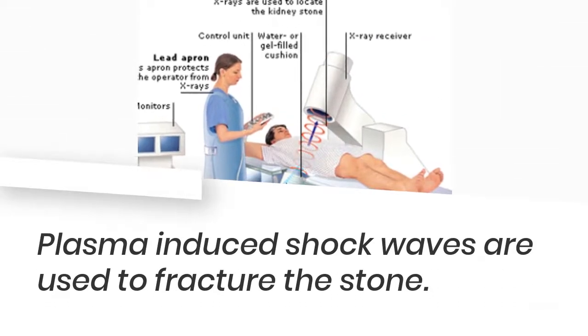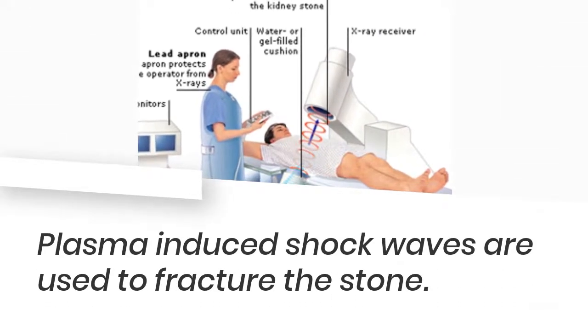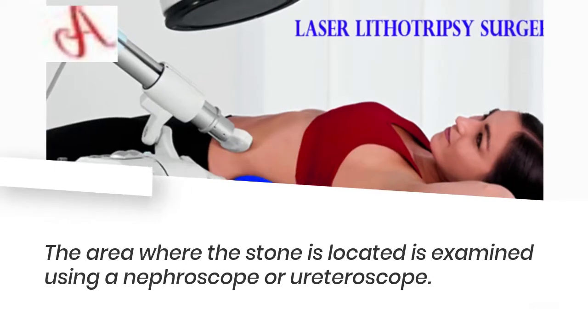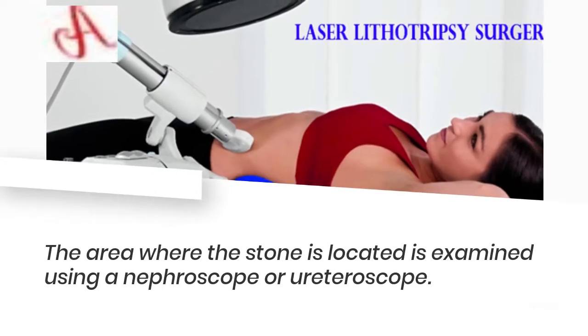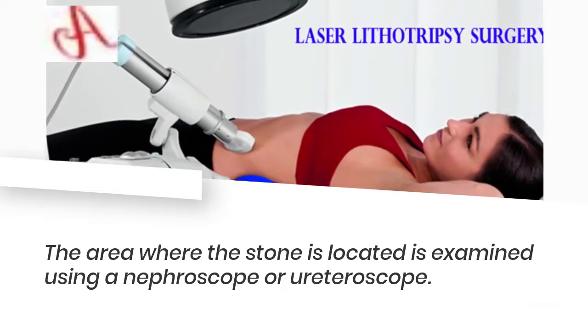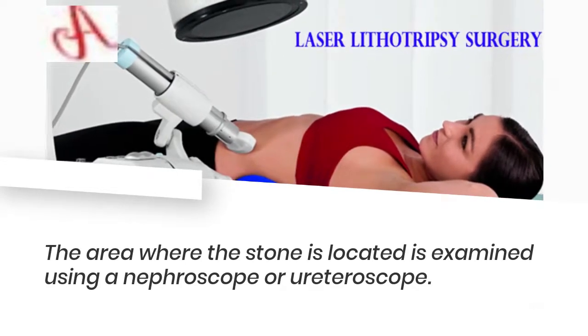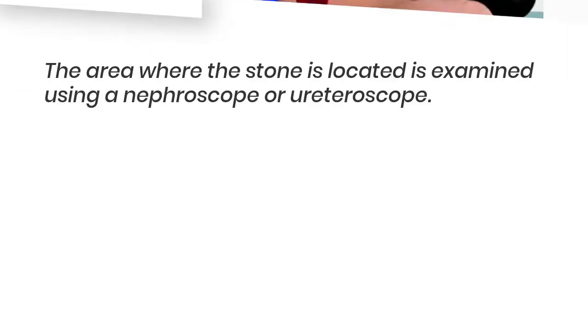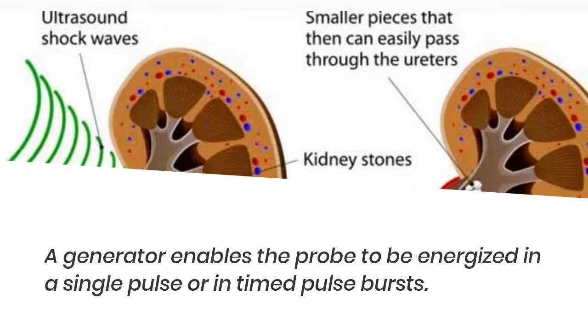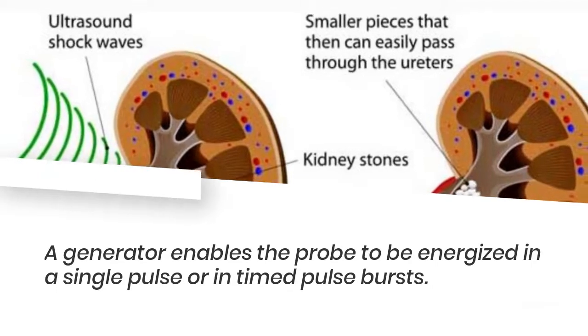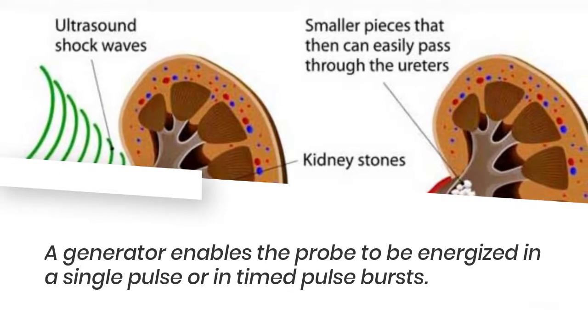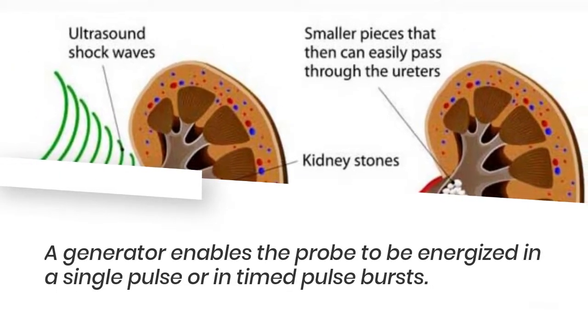Plasma-induced shock waves are used to fracture the stone. The area where the stone is located is examined using a friscope or ureteroscope. A generator enables the probe to be energized in a single pulse or in timed pulse bursts.